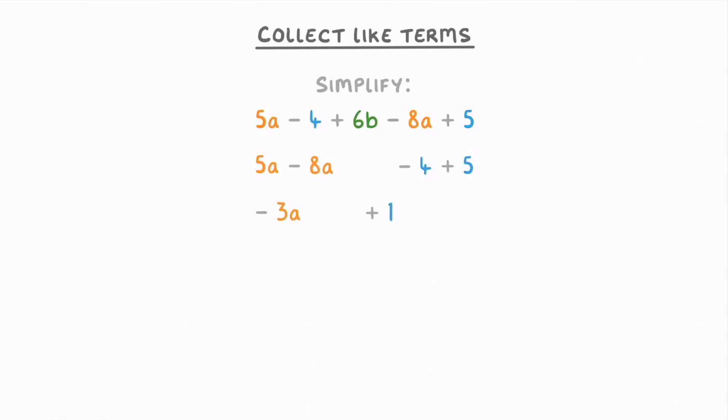And there's just one b term, so we can tag on the plus 6b, giving us minus 3a plus 6b plus 1 as our final answer.